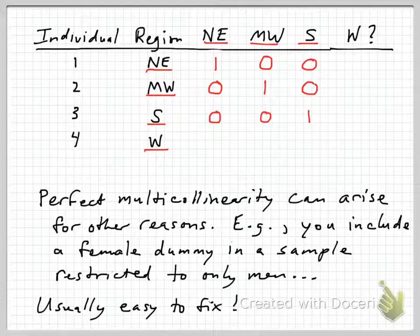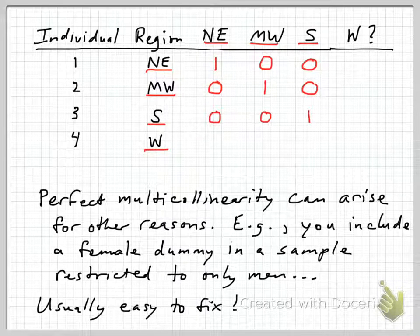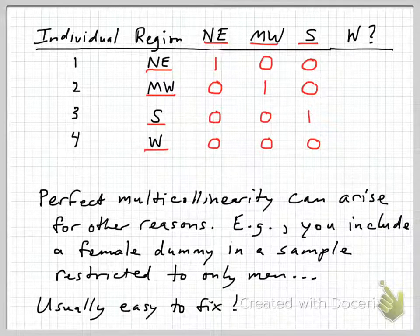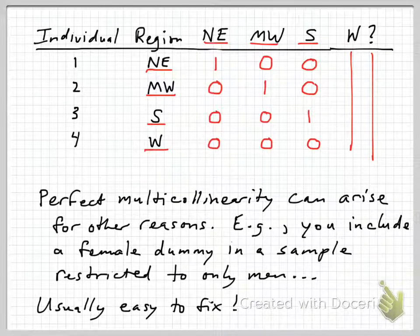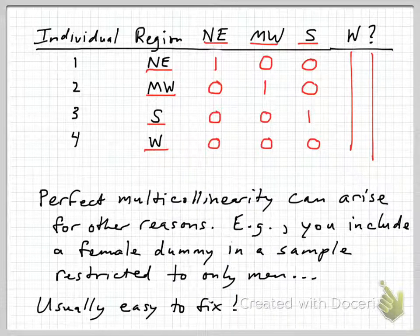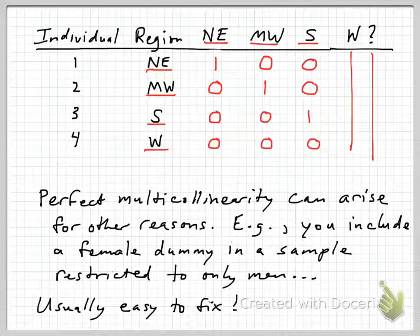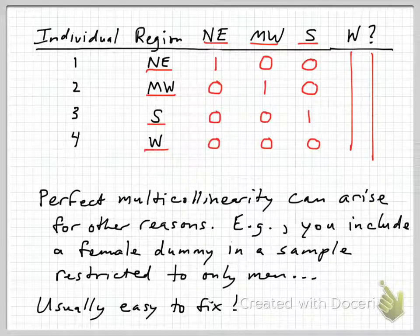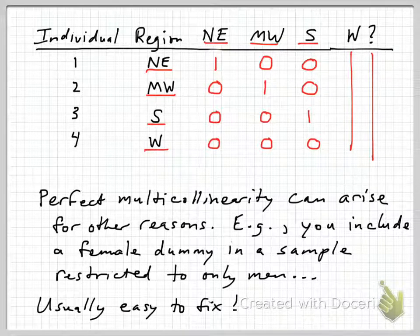You might ask: what about the person in the West? Don't we need a dummy variable for their case? The answer is no. If we have the other three and there are only four possible regions, the person who lives in the West is perfectly identified by having zeros on all of those. If we were to include a binary variable for West along with the others, we'd fall into the dummy variable trap. With k equals four categories, we only need k minus 1, or three binary variables. Including the last dummy variable leads to the regression being unable to estimate all four, and most regression procedures will just drop one variable.